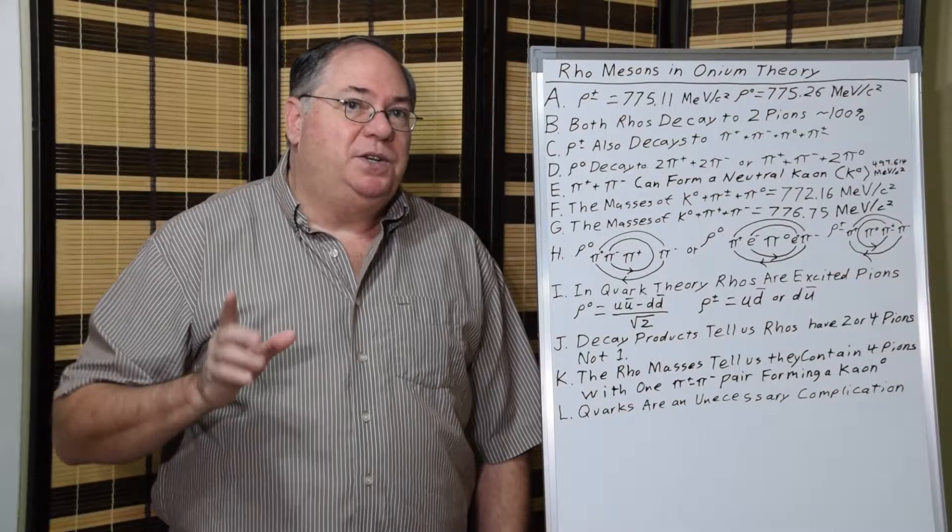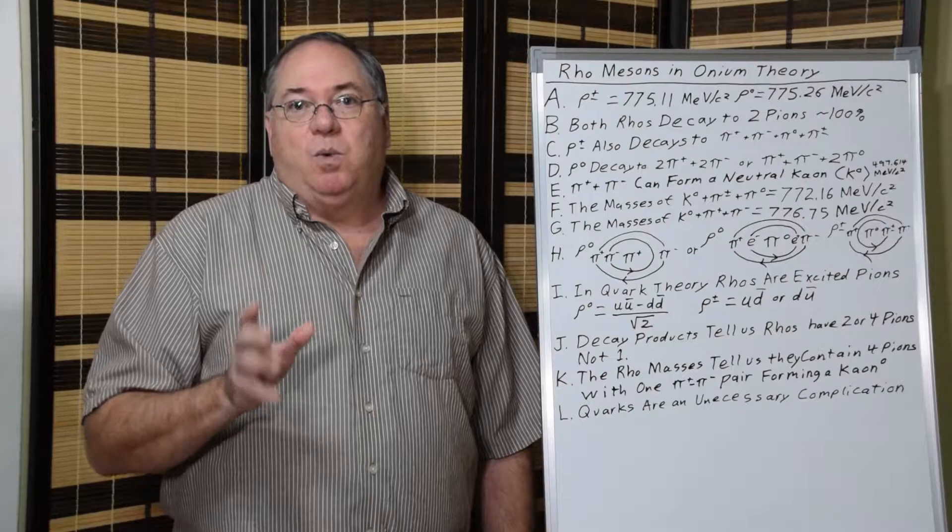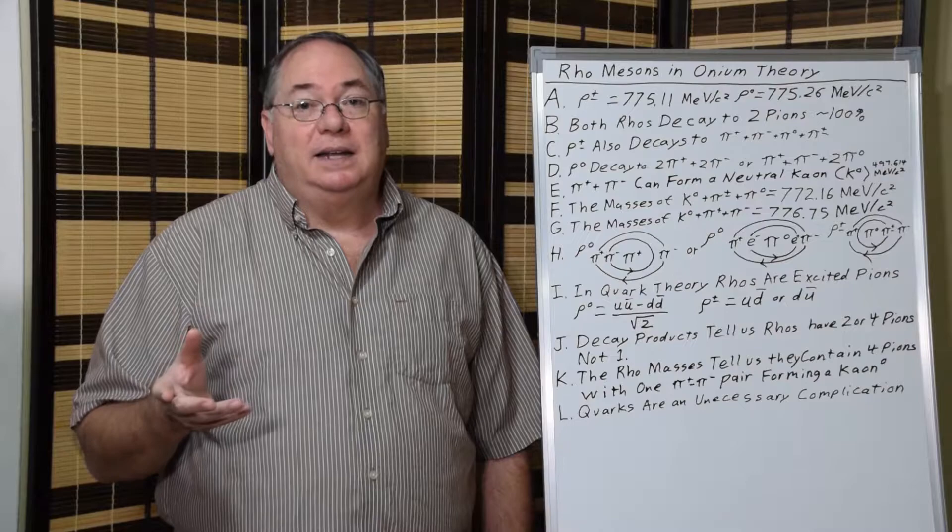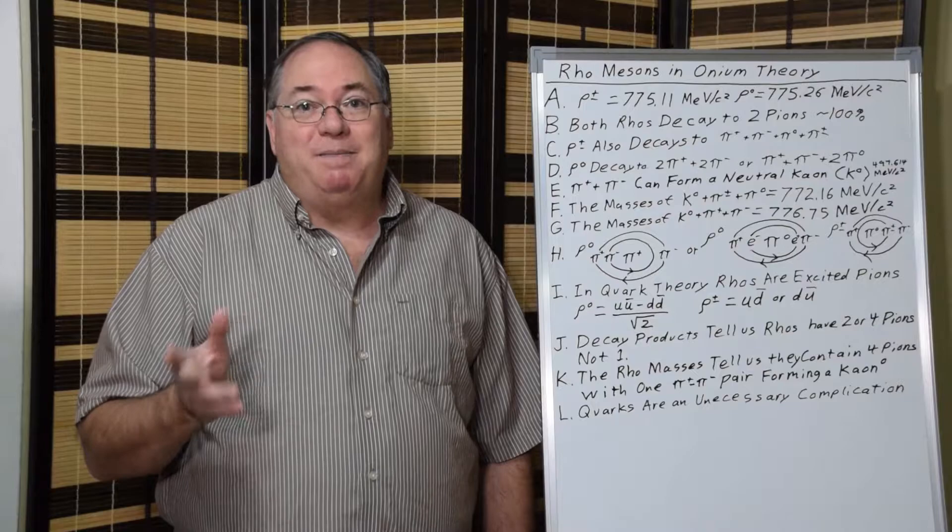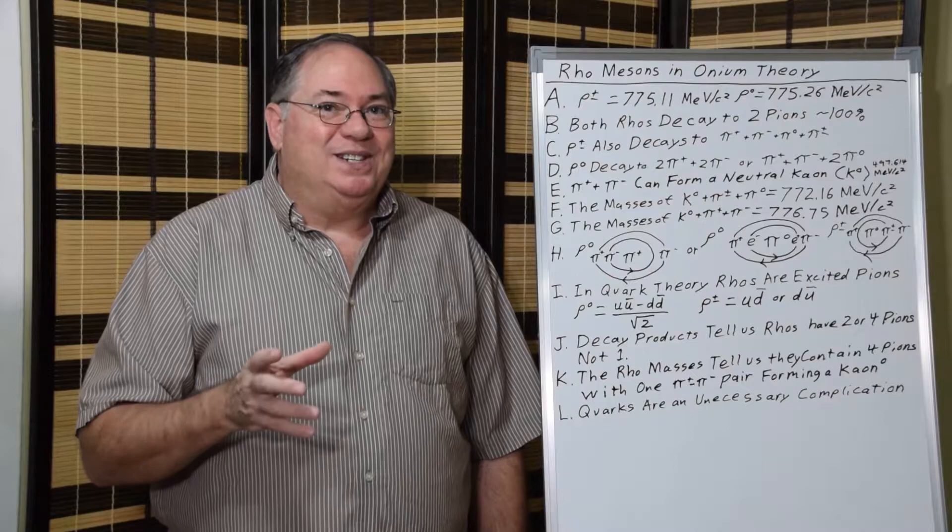They both decay primarily to two pions. This is interesting because in the quark model, the rho mesons are essentially an excited pion, but they decay primarily to two pions, which doesn't make any sense.